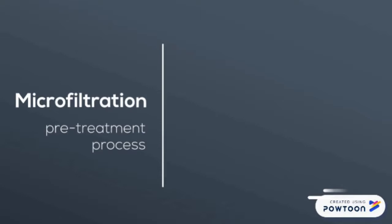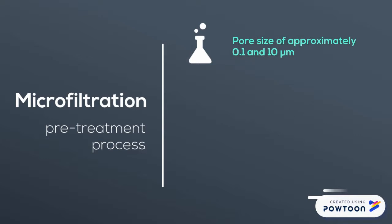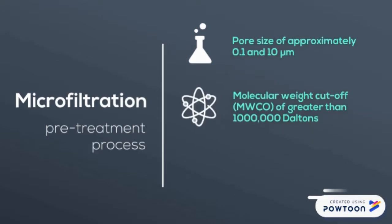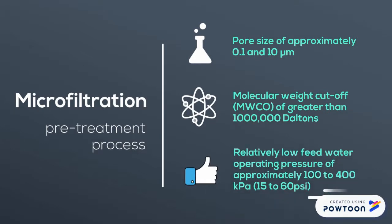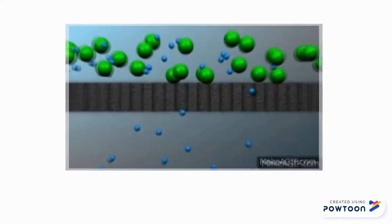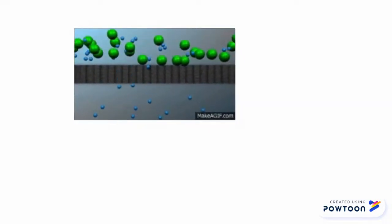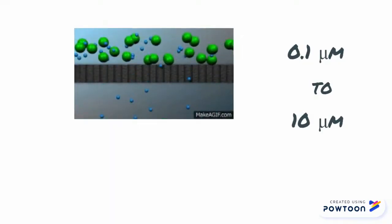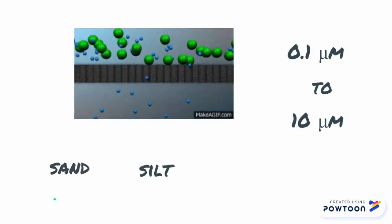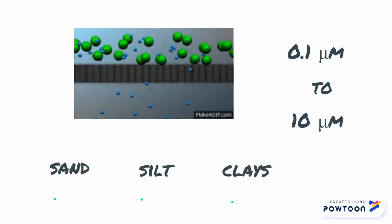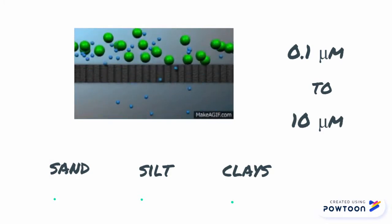Microfiltration is a membrane separation that usually serves as a pre-treatment process for other separation processes such as ultrafiltration and nanofiltration. The separation process is carried out using membranes with a pore size of approximately 0.1 to 10 micrometers, a molecular weight cutoff of greater than 1 million daltons, and a relatively low feed water operating pressure of approximately 100 to 400 kiloPascal. Since the pore size is approximately 0.1 to 10 micrometers, microfiltration membranes fall in between ultrafiltration membranes and conventional filters, making them suitable for separating large-size materials such as sand, silt, and clays.